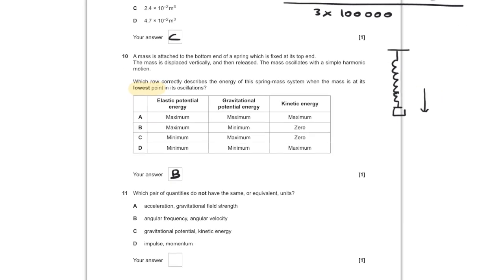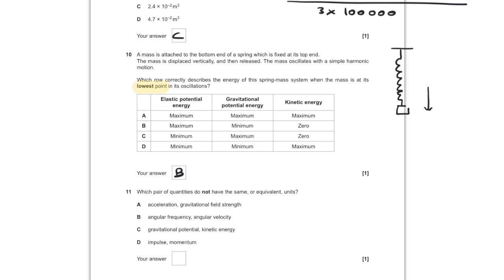For question number eleven, which pair of quantities do not have the same units? Acceleration and gravitational field strength both have units of newtons per kilogram or metres per second squared — same. Angular frequency and angular velocity both have units of per second — same. Gravitational potential and kinetic energy do not have the same units, because gravitational potential is not in joules — it's joules per kilogram. So C is the answer.